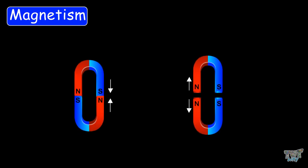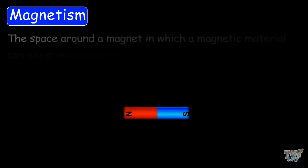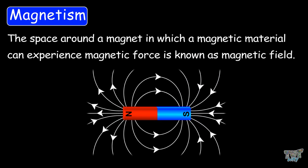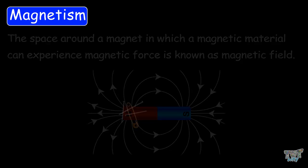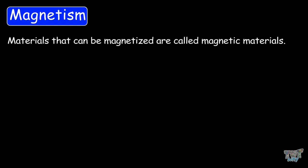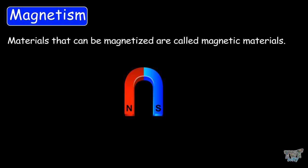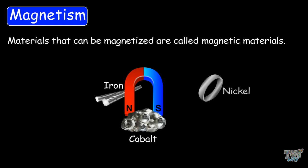Magnets either attract or repel other magnets or magnetic materials. The space around the magnet in which a magnetic material can experience magnetic force is known as the magnetic field. Materials that can be magnetized are called magnetic materials — for example, iron, cobalt, and nickel.